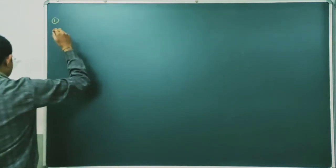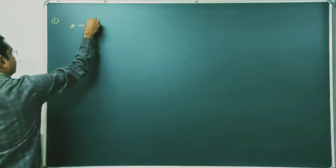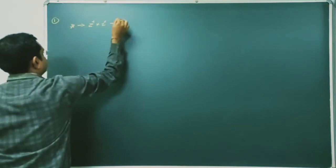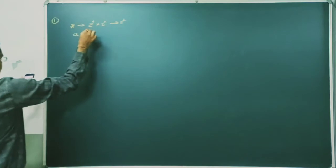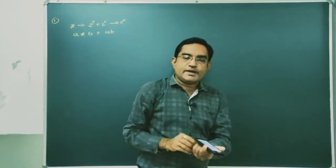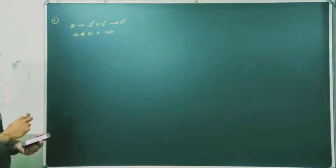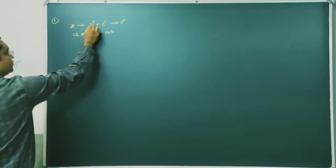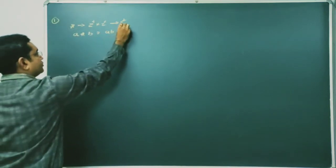The first binary operation is on the set of positive integers Z+. So the given binary operation star is defined as Z+ × Z+ → Z+. We have to check whether a★b = a × b is a binary operation. The basic requirement is: if a ∈ Z+ and b ∈ Z+, then the result must also belong to Z+.